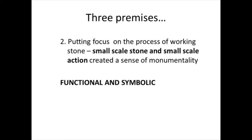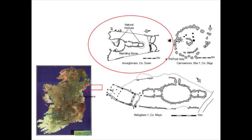This brings us to the second point — the notion of small-scale stone and small-scale action. I want to emphasise that I'm talking on a symbolic front this morning, while accepting entirely that there's a functional aspect as well. My query is that we sometimes either talk functionally or talk symbolically, and perhaps we need to do both. In the case of working stone on site, we tend to assume a kind of functionality — as at Anakmar, where a local outcrop is used and quarried and the monument is built immediately adjacent to it, and we might immediately assume this is just functional use of an available local source.